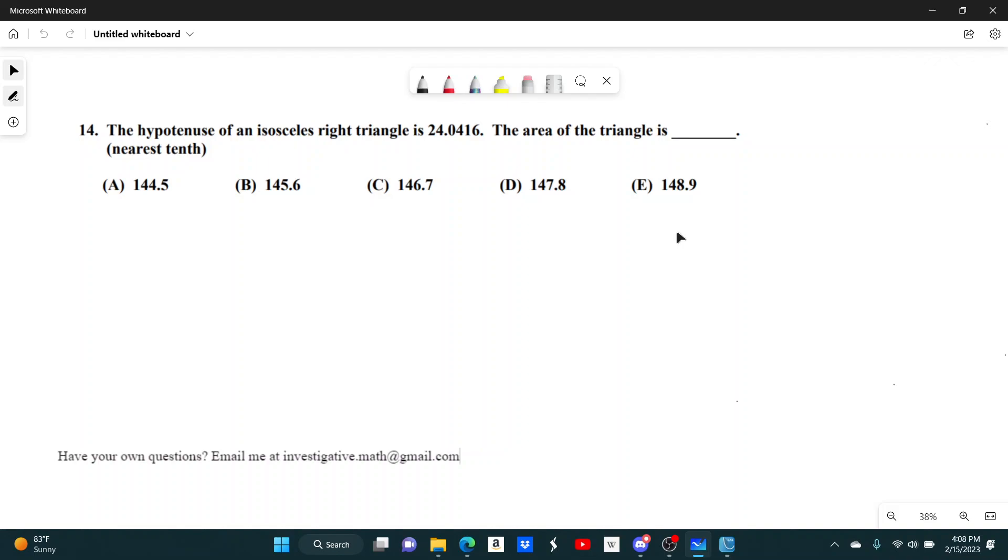If we have an isosceles right triangle, that means the two legs of the triangle are going to be equivalent. This tells us it's a right triangle, and since it's isosceles, this leg and this leg are going to be the same. And it tells us the hypotenuse is 24.0416.